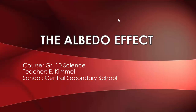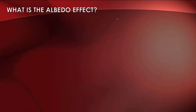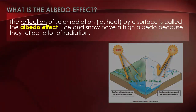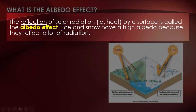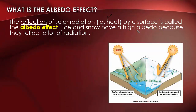So we're going to do the albedo effect now. What is the albedo effect? The reflection of solar radiation, such as heat — that's the main thing we're interested in here — by a surface is called the albedo effect. Ice and snow have a high albedo because they reflect a lot of radiation, giving a high albedo effect.